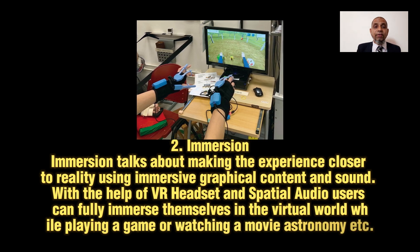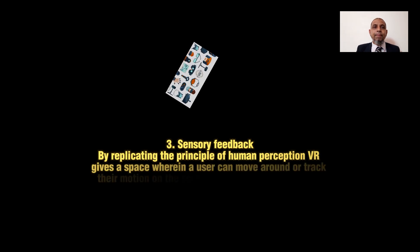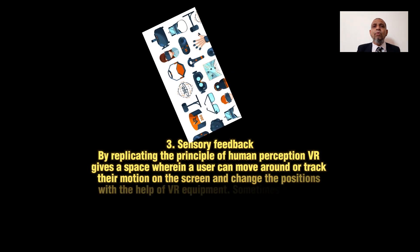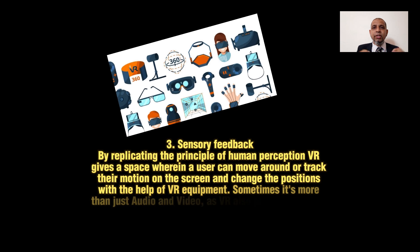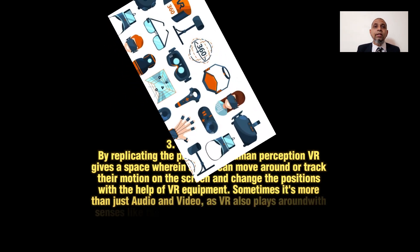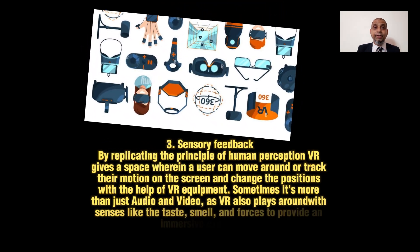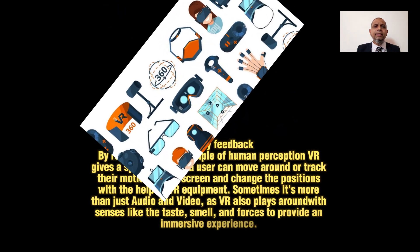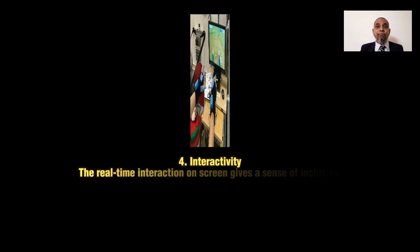Element number three: sensory feedback. By replicating the principles of human perception, virtual reality gives a space where a user can move around or track their motion on the screen and change their position with the help of virtual reality equipment. Sometimes it is more than just audio and video, as virtual reality also plays with senses such as taste, smell, and forces to provide an immersive experience.